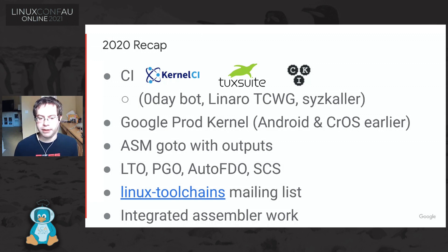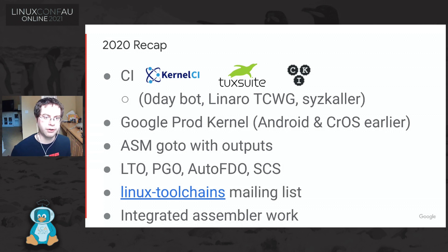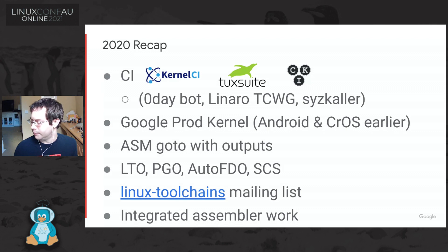We formed the Linux Toolchains mailing list, which is a neat little space for folks interested in toolchain requests to collaborate on what are the needs of the kernel community out of their toolchains. And we spent a lot of time in 2020 getting Clang's integrated assembler into shape to use it to assemble either inline assembly or out-of-line assembler files in the Linux kernel. It's a single pass assembler, so it's inflexible — you can't refer to things until you've seen them already. It's not as ad hoc, a little less flexible to work with, but a lot of work went into it in 2020.